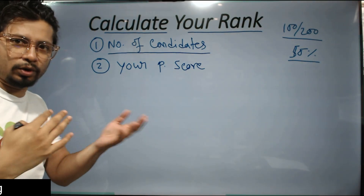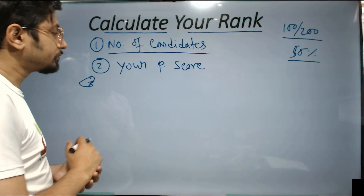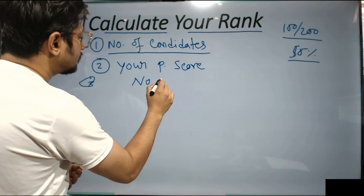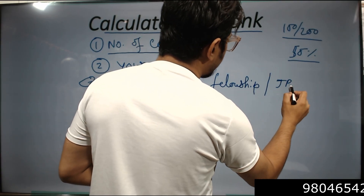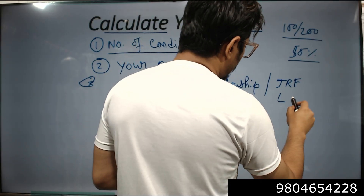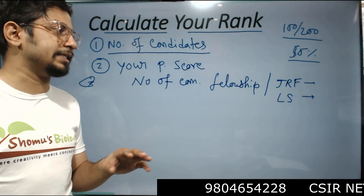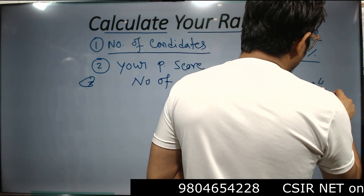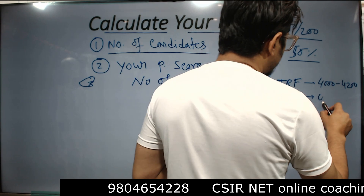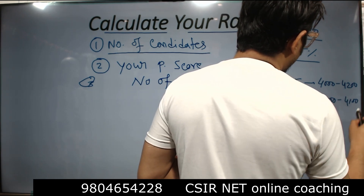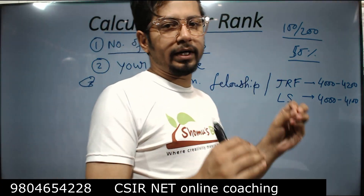Your percentile you can easily get from your scorecard. The third most important factor is the number of candidates given the fellowship. For example, if you applied for JRF, how many students were given JRF or lectureship? In 2022, they generally offered four thousand to four thousand two hundred candidates for JRF, and for LS approximately four thousand to four thousand one hundred candidates.